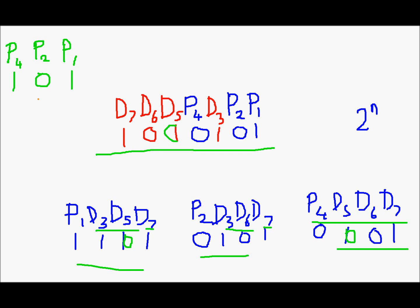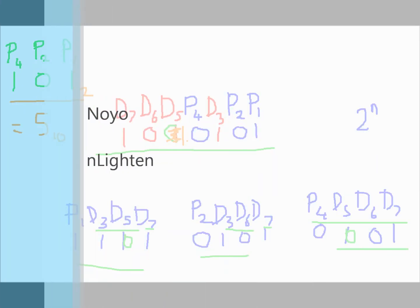Now if you convert this binary number into decimal: 101 in binary is 5 in decimal. This indicates that the 5th bit is incorrect. So in place of 0, we have 1 over here. This was about Hamming codes. I hope you guys enjoyed this video. Thank you very much for listening.